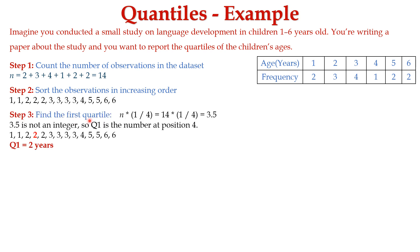In step 3, we need to find the first quartile. The formula to find the first quartile is n multiplied by 1 divided by 4. We know the value of n is 14, so 14 times 1/4 equals 3.5. Since 3.5 is not an integer value, Q1 is the number at position 4 by rounding up. At the fourth position, we have the value 2, so Q1 is equal to 2 years.